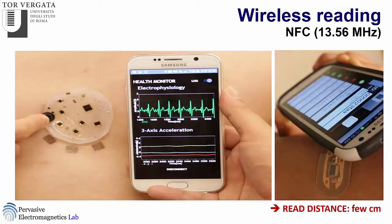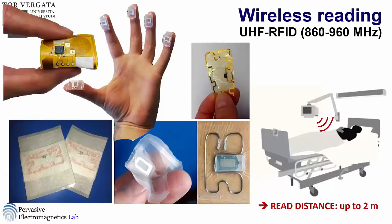In the NFC case, the antenna is simply a coil, but you need to place the mobile phone very close to the device — a couple of centimeters. This is useful because you can use a mass-distributed object, but you need the collaboration of the user. In other applications, you want an automatic reading of biophysical parameters without placing anything close to the body.